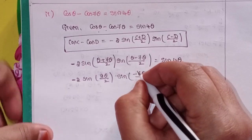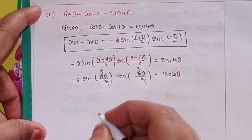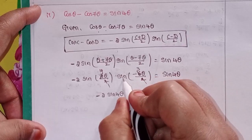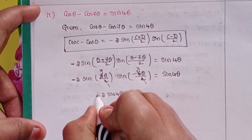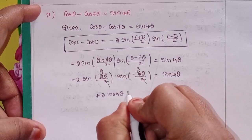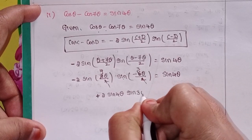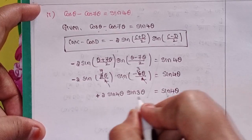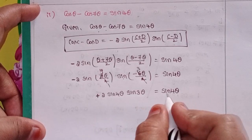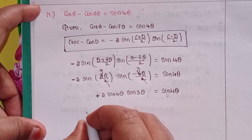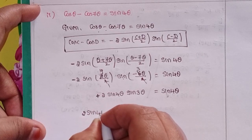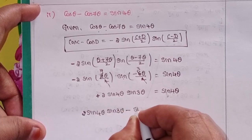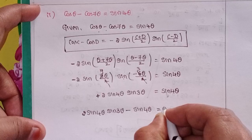Simplifying: -2·sin4θ·sin(-3θ) = sin4θ. Since sin(-θ) = -sinθ, minus times minus gives plus. So 2·sin4θ·sin3θ = sin4θ. Moving sin4θ to the left side gives 2·sin4θ·sin3θ minus sin4θ equals 0.